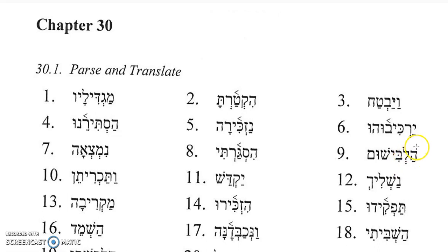Number six, Yar-Kivu-Hu. The root is Rakav, which means to ride. It has a prefix Yod, which suggests it is an imperfect, with a Patah and a Hirik-Yod in the middle — it's a Hifial imperfect, third masculine plural. With a third masculine singular suffix, the Hu at the end, it would mean: they will cause him to ride.